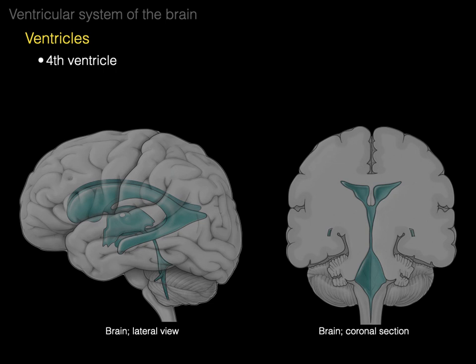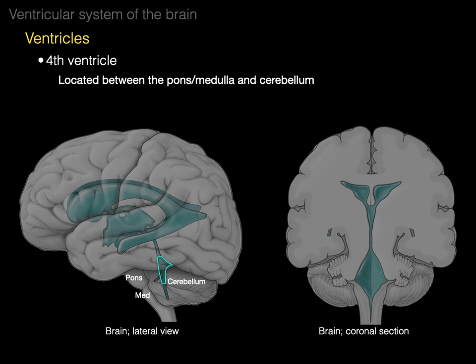The fourth ventricle is located between the pons and medulla and the cerebellum. There's the pons and medulla anteriorly, and there's the cerebellum posteriorly, and outlined there is our fourth ventricle. In the coronal section, there's the cerebellum, and outlined there is our fourth ventricle.